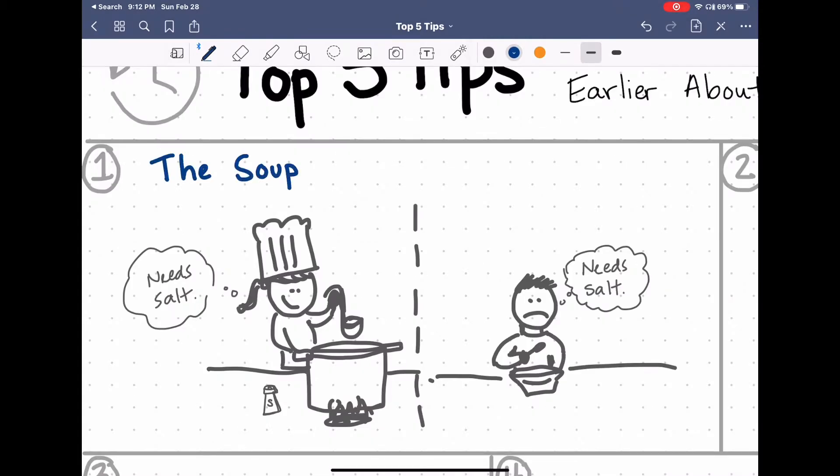My favorite analogy about assessment comes from Robert Steak. He says, when the cook tastes the soup, that's formative. When the guest tastes the soup, that's summative. I think back to all those years I waited too late for the summative assessment, when I could have done more taste tests and made adjustments earlier.